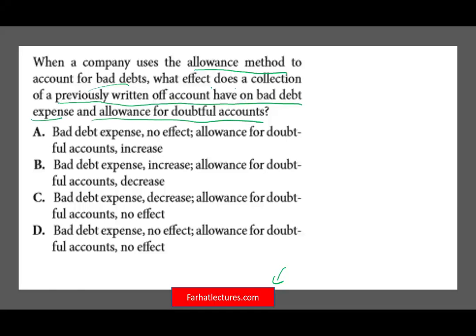At the end of every accounting period — say December 31st, year one — we estimate bad debt. We debit bad debt expense $10,000 and credit allowance for doubtful accounts $10,000. This means we estimated we will lose $10,000 of bad debt expense in the coming period. This is what we booked at year end.